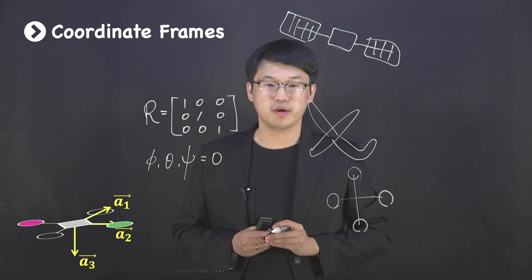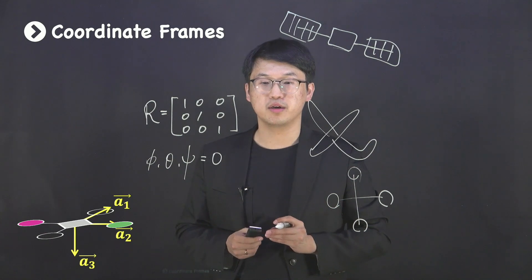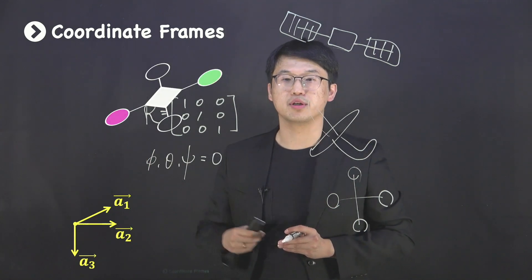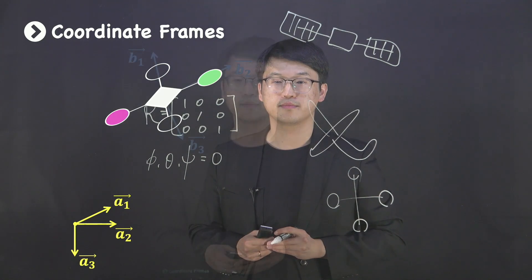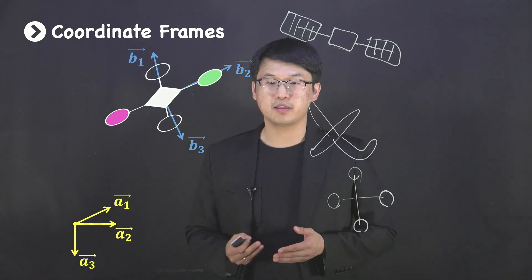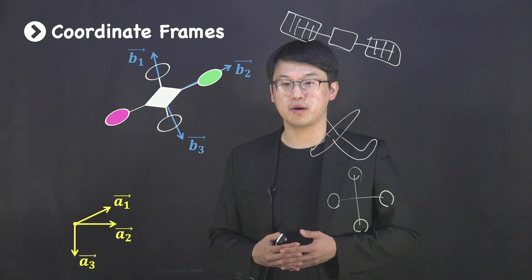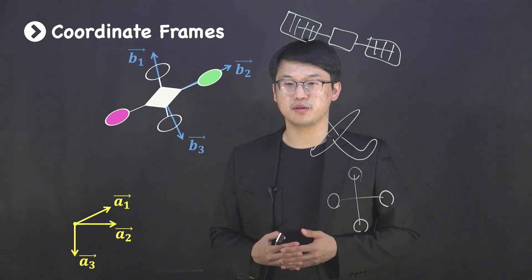Now, a question may arise when your drone flies away from the origin with arbitrary rotations. How do you express the attitude of the body in this case? Now, we need to start talking about coordinate transformations.